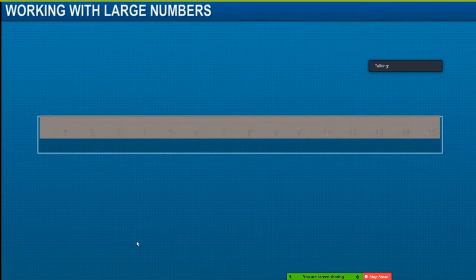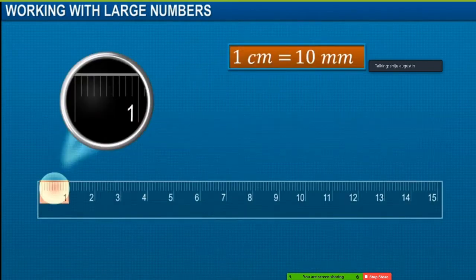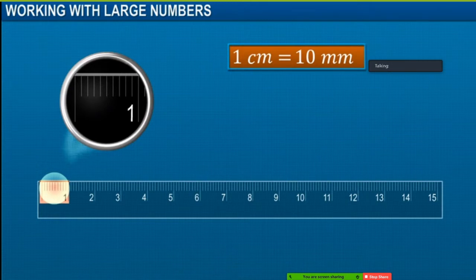Centimeters and meters are used as units of measurement for small measurements. To measure bigger measurements, a higher unit of measure, like meter, is used. 1 meter is equal to 100 centimeters.